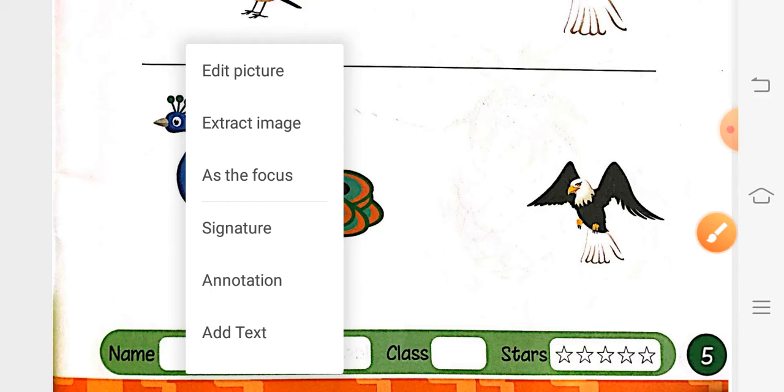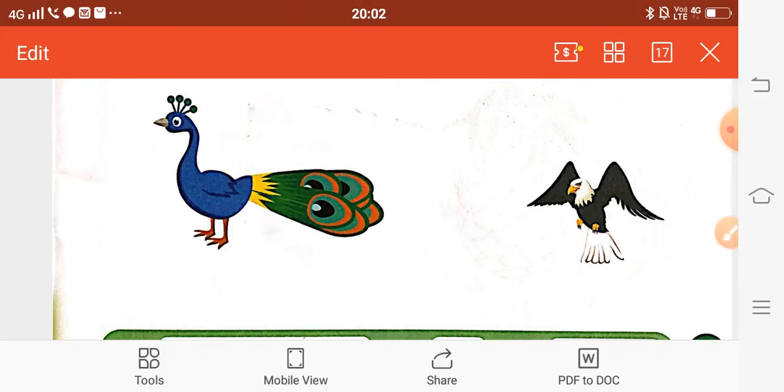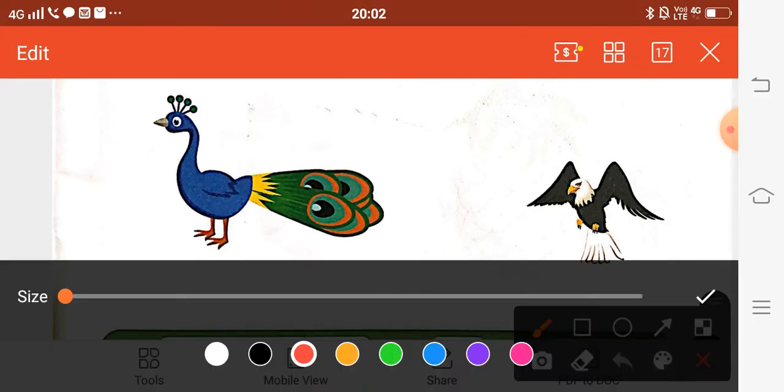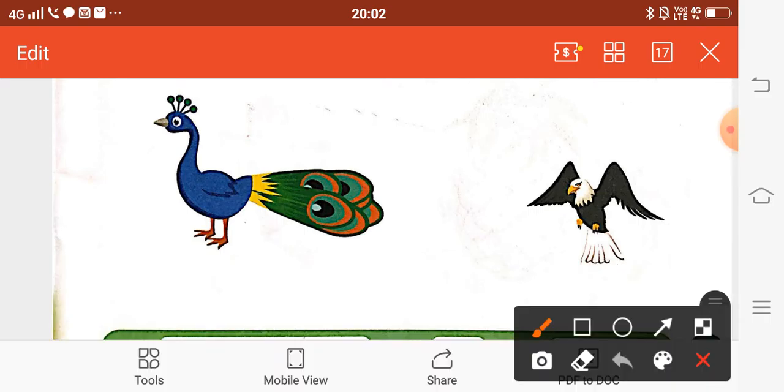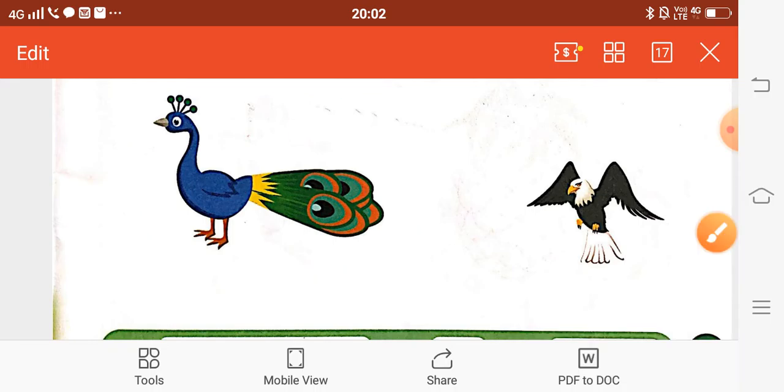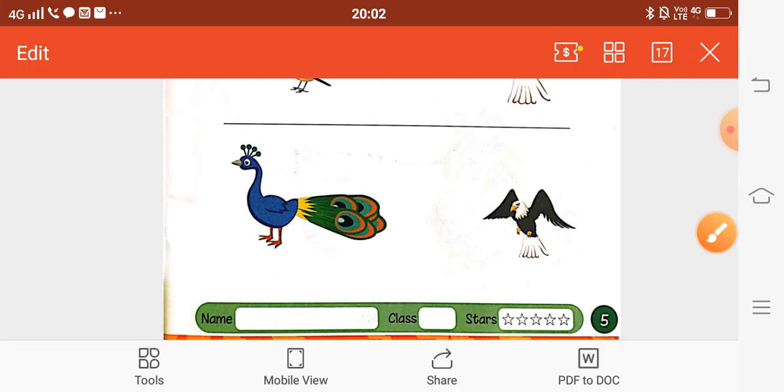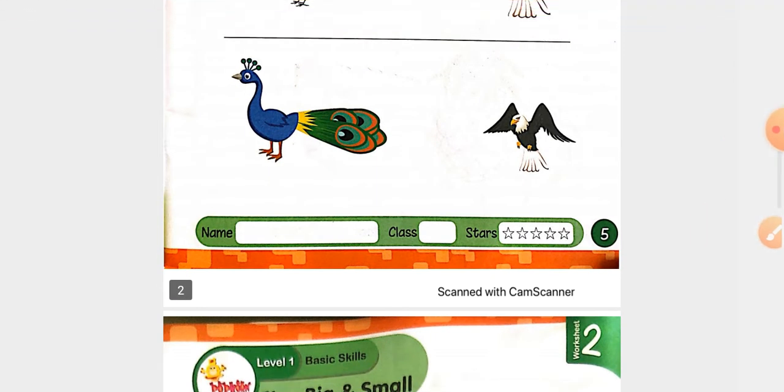Then comes the last one. So what is the last one? Eagle and peacock. Eagle bada hai ya peacock bada hai? Peacock bada hai. So we need to circle peacock. So understood? Jo object bada hai, hame usse circle karna hai.